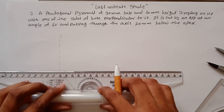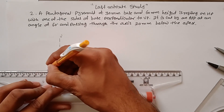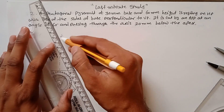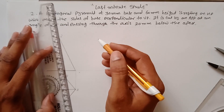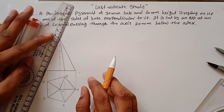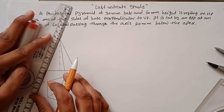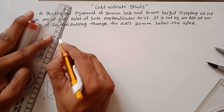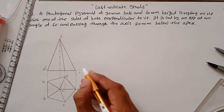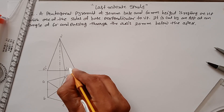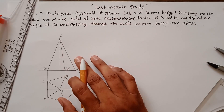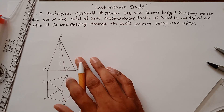Complete all the points by joining the lines and give names to them. This point is A dash, B dash; this point is C dash, E dash; and this is D dash. Your front view and top view of the pyramid are now complete. Now you have to develop the surface.